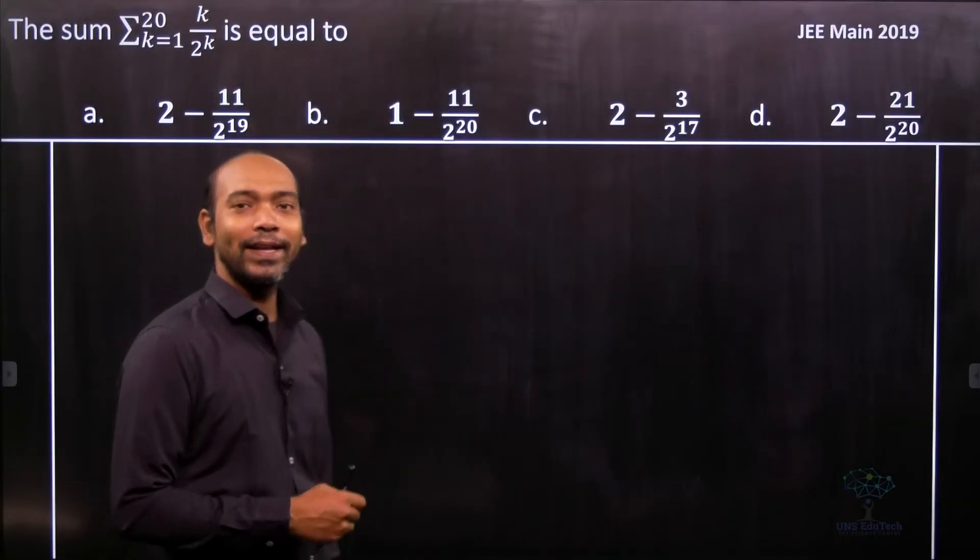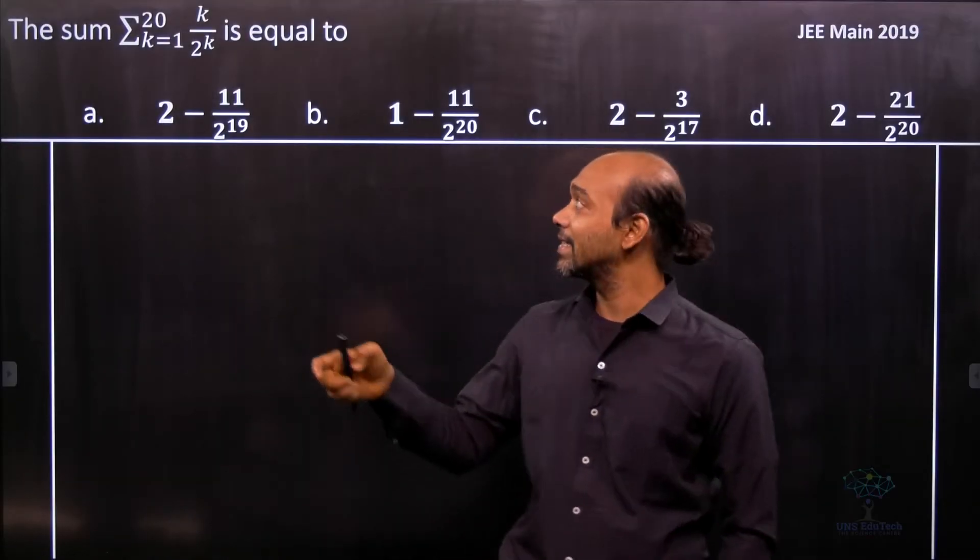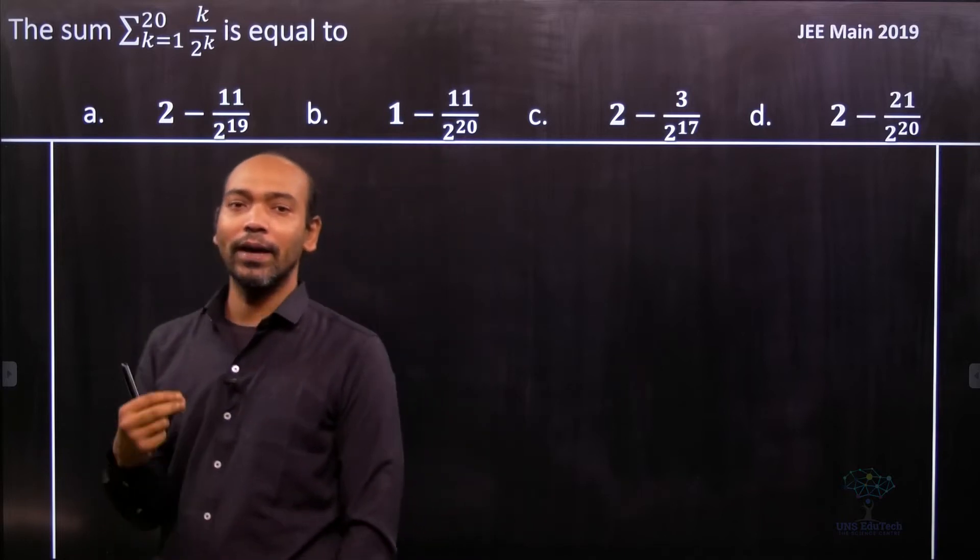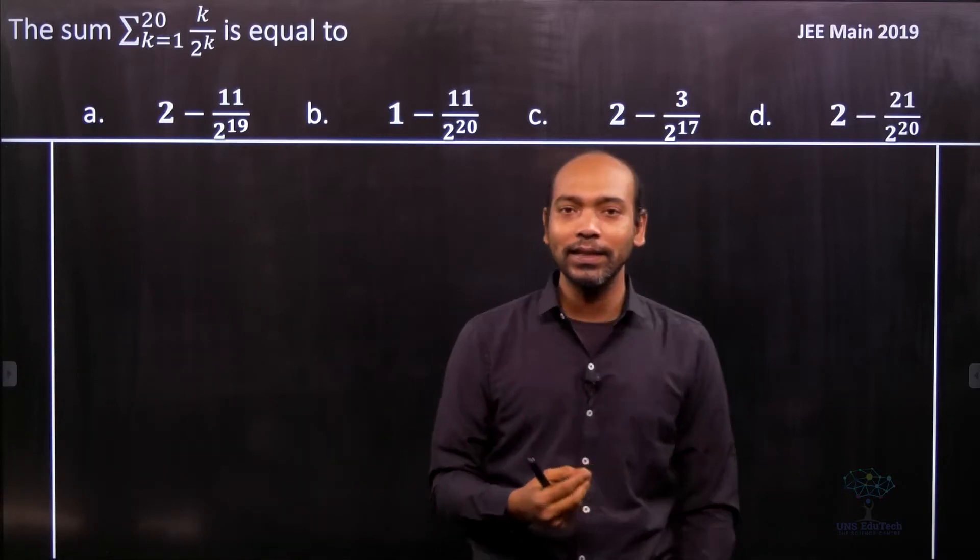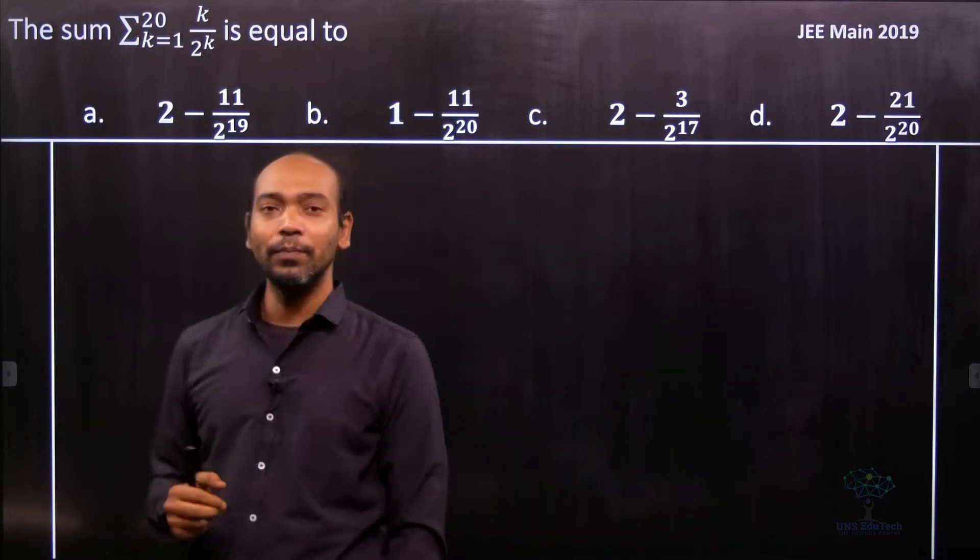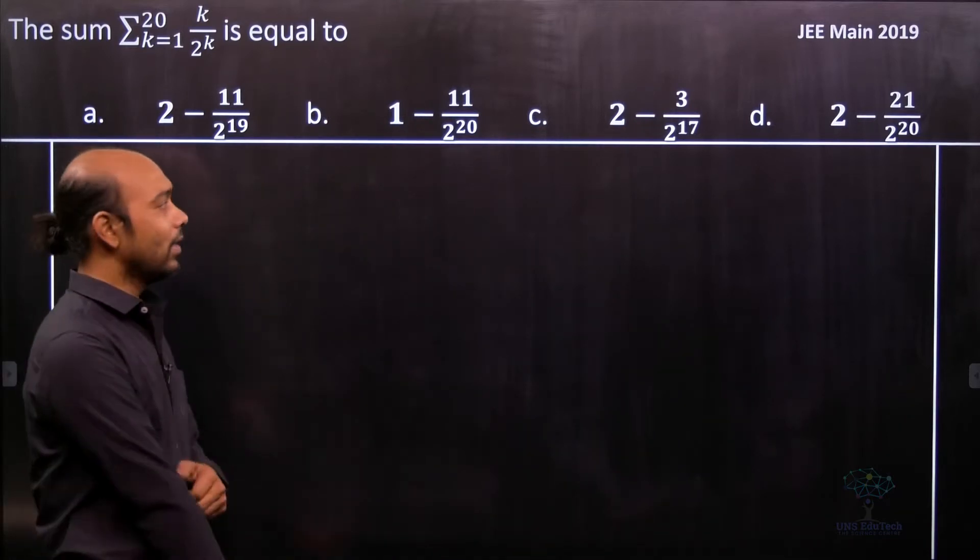Hi, so here we have to find this sum. We all know that this is a sigma symbol and that means we have to add the terms from k equal to 1 to 20 of the form k by 2 to the power k. So let's go ahead.